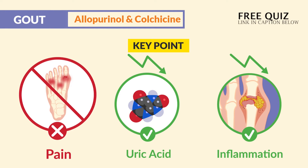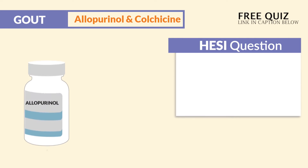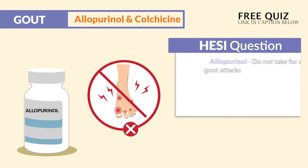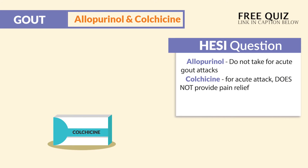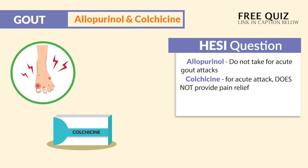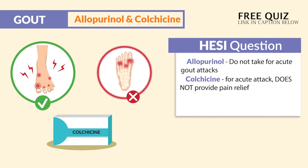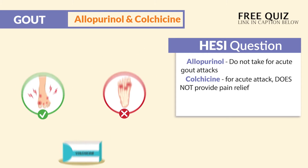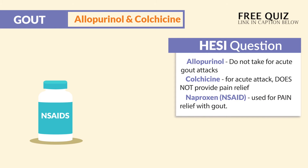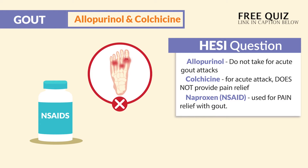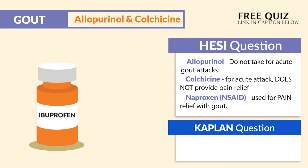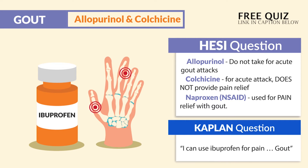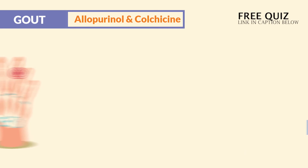Again, not for pain directly, since it's not an analgesic. One question bank says allopurinol — do not take for acute gout attacks — and colchicine is for the acute attack and does not provide pain relief. Now, naproxen, the NSAID, is used for pain relief with gout. And a Kaplan question says I can use ibuprofen for pain during gout.